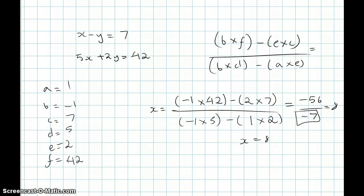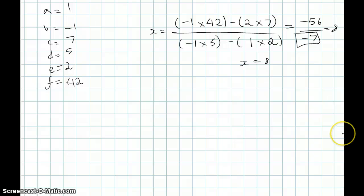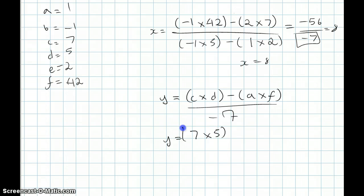And keeping the denominator the same for y, we use again the equation for y: c times d minus a times f over minus 7. So that would give us 7 times 5 minus 42 times 1 over minus 7. And over here we get 35 minus 42, which is minus 7 over minus 7, which gives us y is equal to 1. So we get our x and y values.